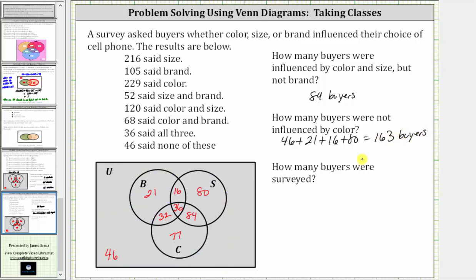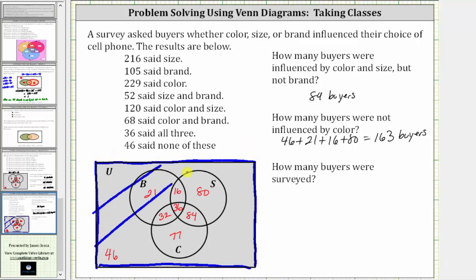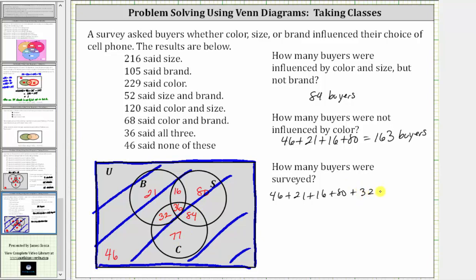Finally, how many buyers were surveyed? The number of buyers surveyed is the total in the universal set — the entire rectangle. That equals 46 plus 21 plus 16 plus 80 plus 32 plus 36 plus 84 plus 77, which equals 392 buyers. I hope you found this helpful.